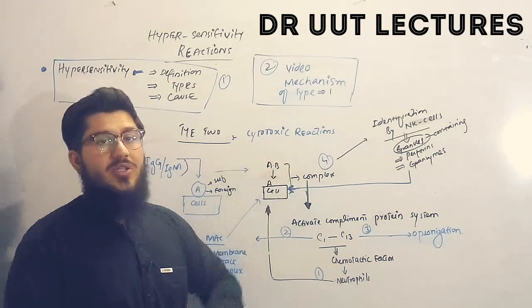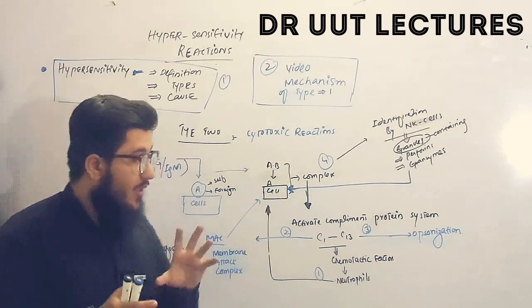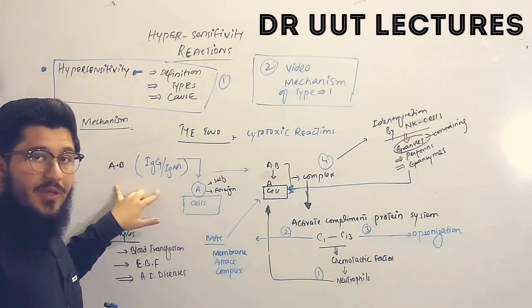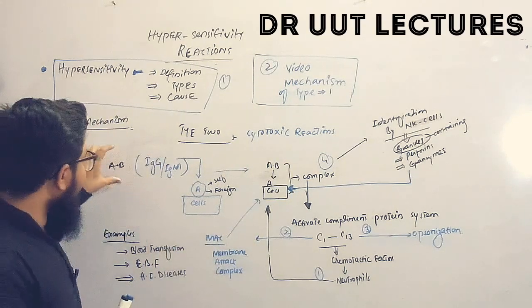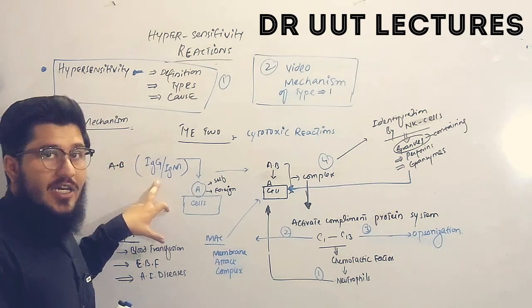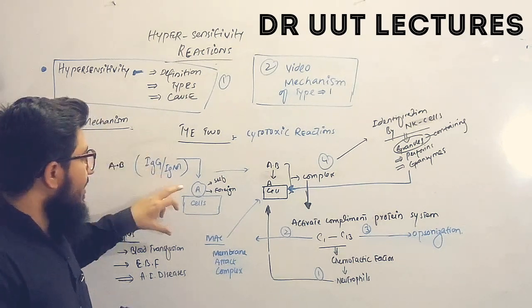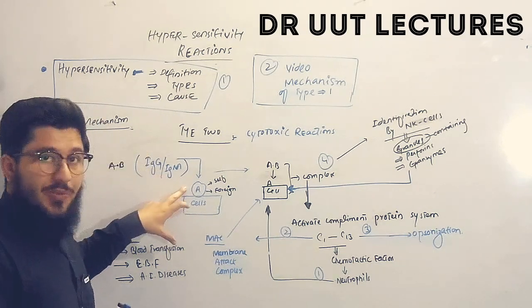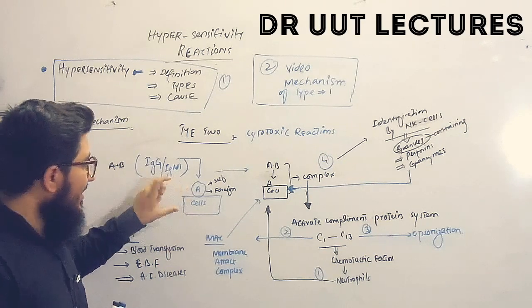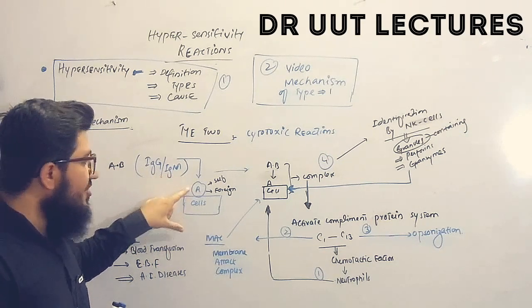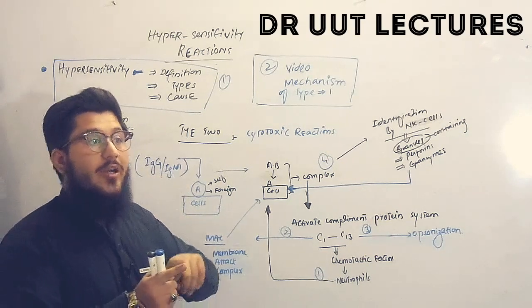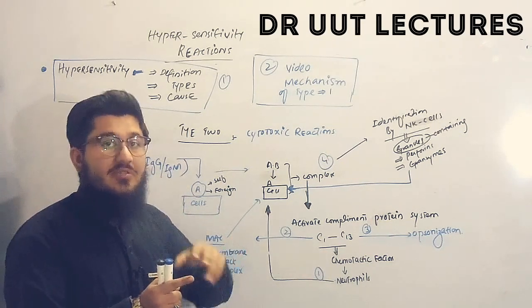Type two reactions are known as cytotoxic reactions. What's happening in the beginning is that antibodies — IgG or IgM — will target the antigens present on the cell. In this case, these antigens may be self or non-self, meaning foreign.